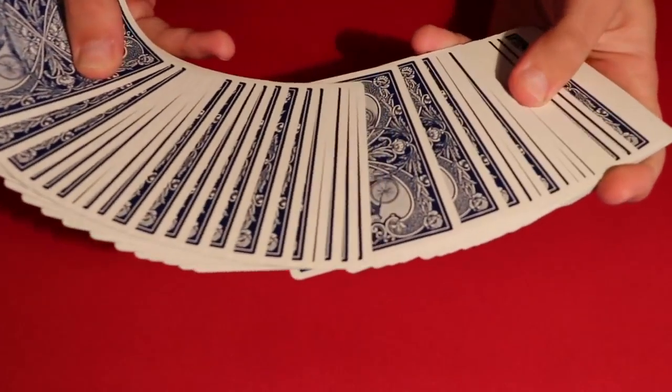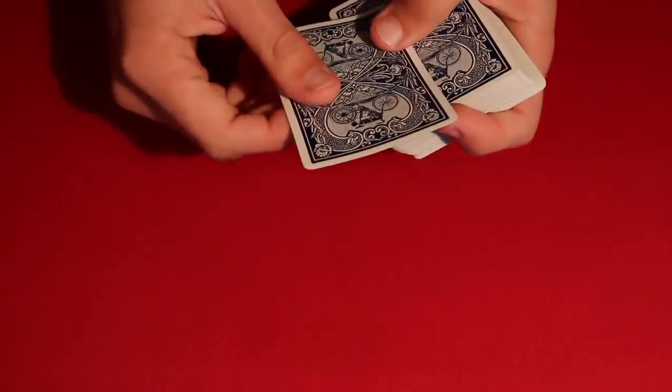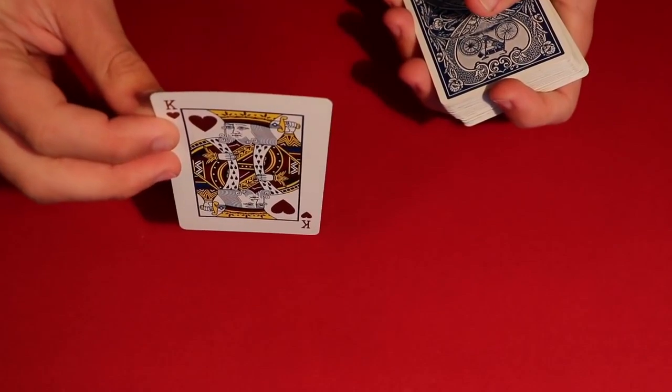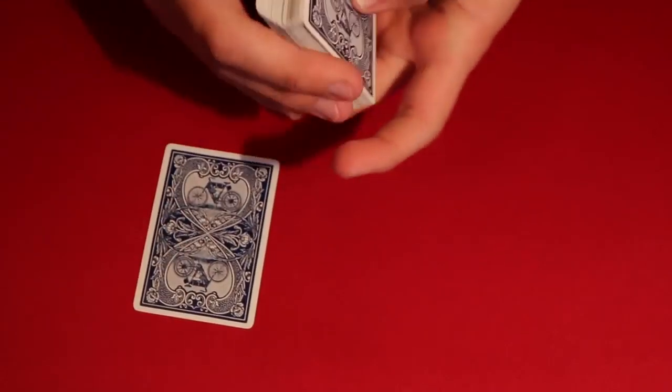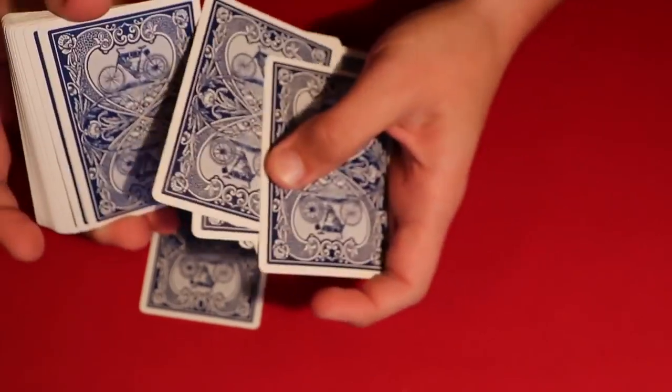All right, so here's how you would start off the trick. You could go ahead and have the spectator pick any card they want to. Let's say in this case this is going to be your card for the trick, and essentially you would just tell me when to stop whenever you want. So let's say you just said stop right around here.